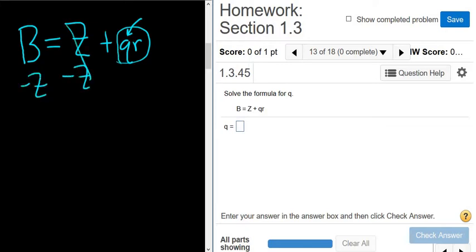So these cancel. So you get big B minus big Z equals q, r. And we're almost there. We have to find q. So it's being multiplied by r.